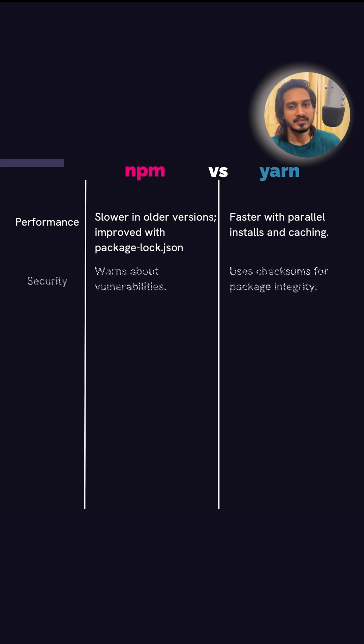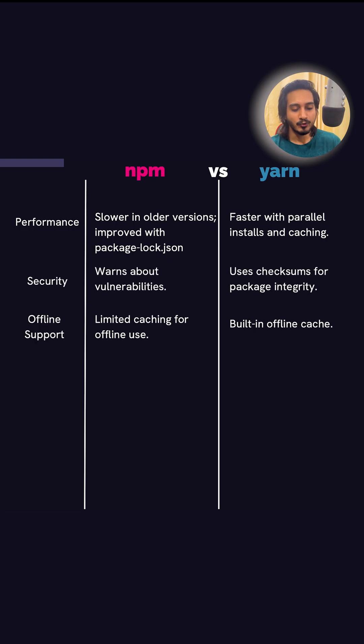Based on security, NPM warns us about vulnerabilities in the code, while YARN uses checksums for package integrity. For offline support, NPM provides limited caching, whereas with YARN it comes built-in.